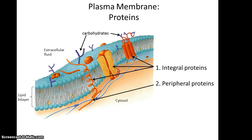Proteins with carbohydrate chains are referred to as glycoproteins — glyco for carbohydrate, protein for being a protein. Also, some of the lipids in the lipid bilayer are actually glycolipids, because instead of having a phosphate group, they have a carbohydrate chain attached to them.